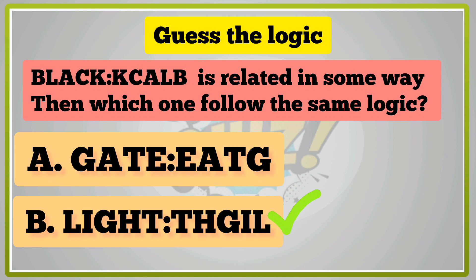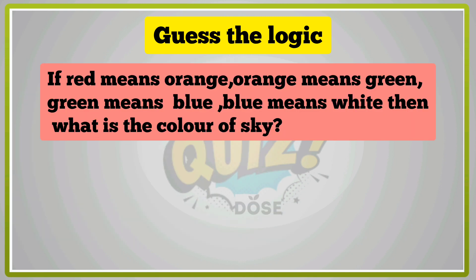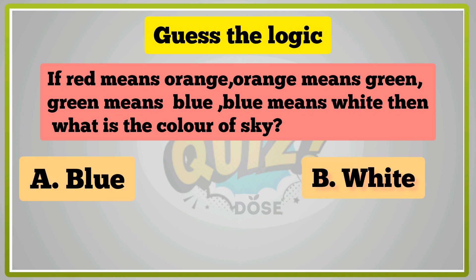Yes, B is right answer. If red means orange, orange means green, green means blue, blue means white, then what is the color of sky? A, Blue, B, White.